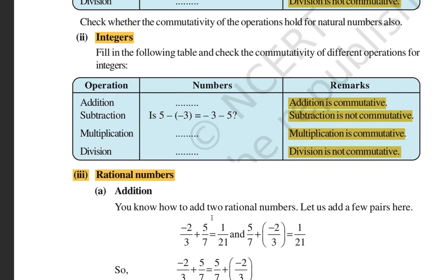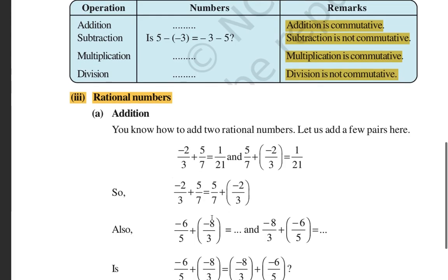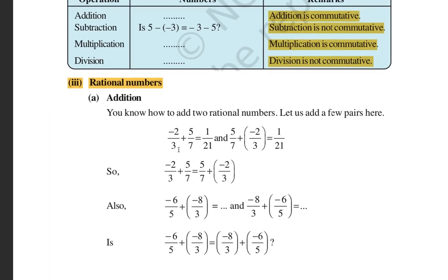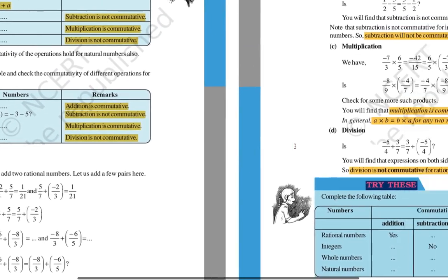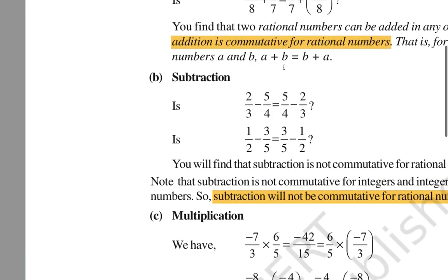Similarly for rational numbers: if you add two rational numbers and exchange them left to right, the result is the same — addition is commutative. For example, minus 2 by 3 plus 5 by 7 gives 1 by 21, and 5 by 7 plus minus 2 by 3 also gives 1 by 21. So if a plus b equals b plus a, commutative property is followed for addition of rational numbers.